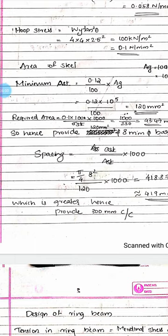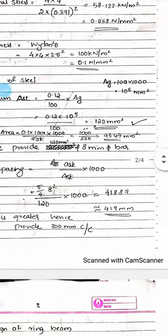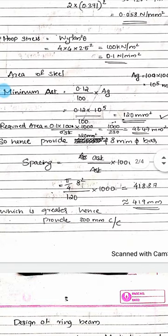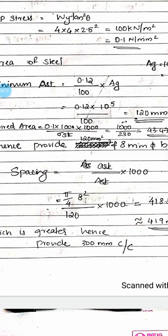Now we calculate the AST. We use the minimum AST equation of 0.12% of the gross area. AST equals 0.12% of gross area, that is, 0.12 divided by 100 into AG.